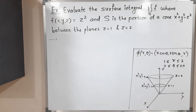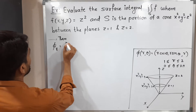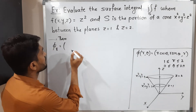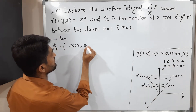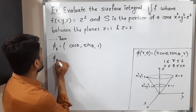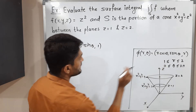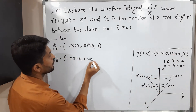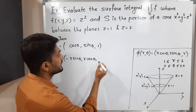Now let us find phi_R and phi_theta. For phi_R, differentiating phi with respect to R: cos theta is constant so the derivative of R cos theta is cos theta; similarly the derivative of R sin theta is sin theta; and the derivative of R is 1. So phi_R equals (cos theta, sin theta, 1). For phi_theta, differentiating with respect to theta: R is constant, the derivative of cos theta is minus sin theta, so the first component is minus R sin theta; the derivative of sin theta is cos theta so the second component is R cos theta; and the derivative of R with respect to theta is 0. So phi_theta equals (minus R sin theta, R cos theta, 0).